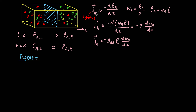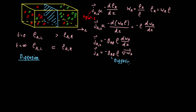To write this more generally: the flux of species A in the Z direction, and more generally the flux of species A in any direction, is this proportionality constant D multiplied by the density multiplied by the gradient of the mass fraction in any direction. This proportionality constant is the diffusion coefficient, and it depends on the characteristics of species A and species B.